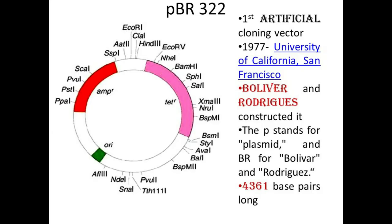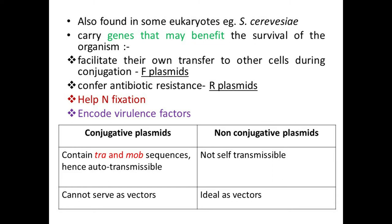Plasmids have the ability to replicate autonomously inside bacterial cells, independent of bacterial cell replication — so one of the properties required of a vector is met here. They may not contain vital genes for bacterial growth or reproduction, but they carry genes which confer special properties such as antibiotic resistance and nitrogen fixation.